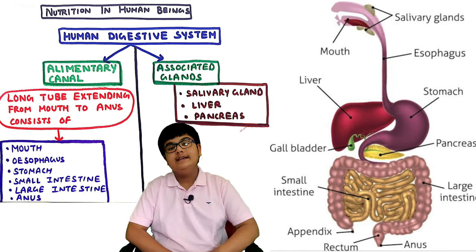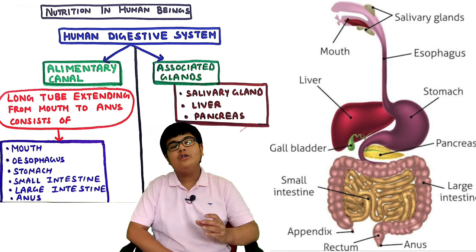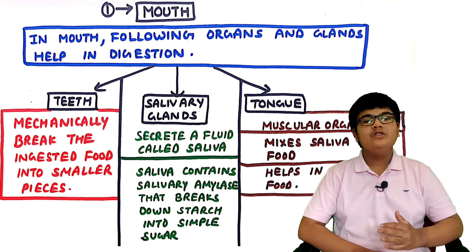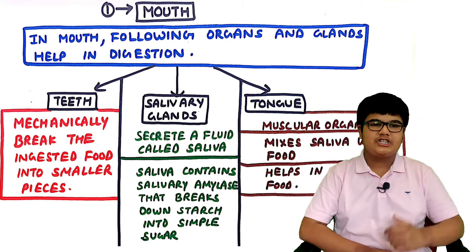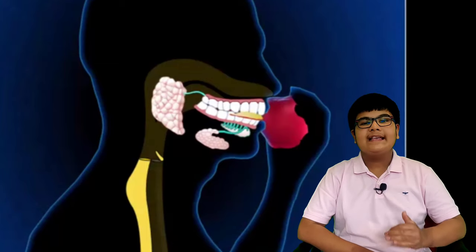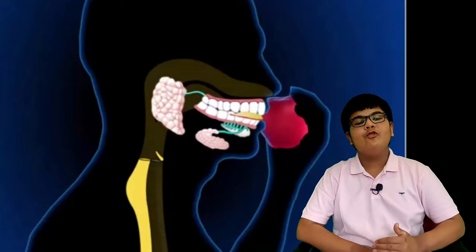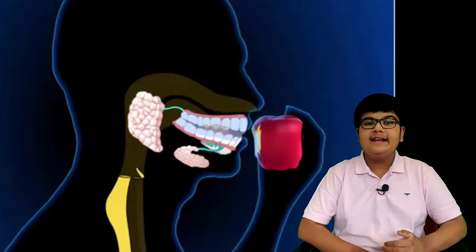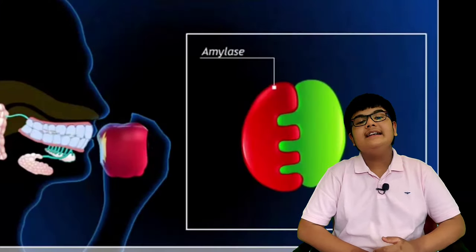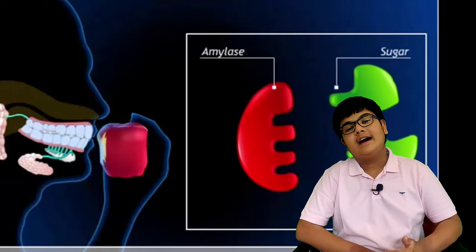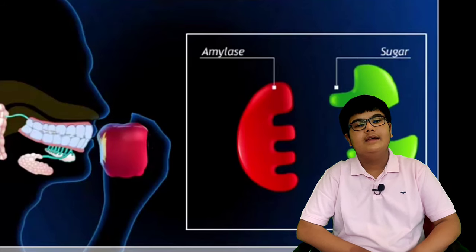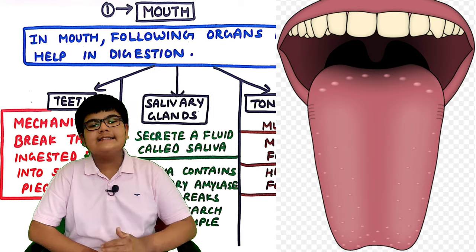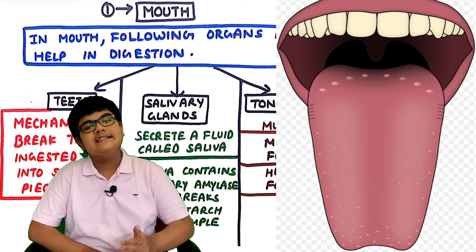In the mouth, the following organs and glands help in digestion. First, teeth - they mechanically break down ingested food into smaller pieces. Second, salivary glands - they secrete saliva, which contains salivary amylase that breaks down starch into simple sugar. Third, the tongue - a muscular organ that mixes saliva with food and helps in swallowing.